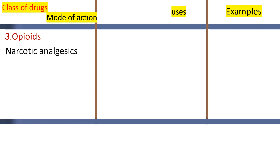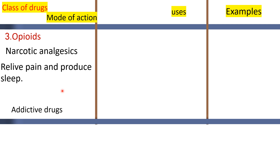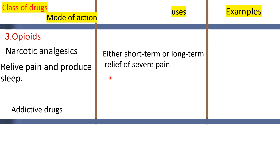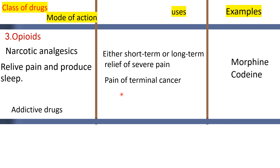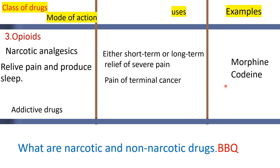Opioids are narcotic analgesics. These can be used for relieving pain. They act on the brain for a short time or long time. The pain of terminal cancer patients is treated with opioids. Examples are morphine. These are narcotic analgesics — if you take them you will become unconscious.